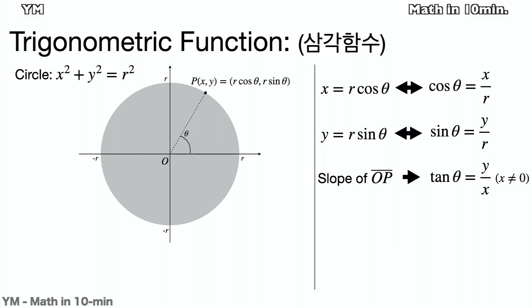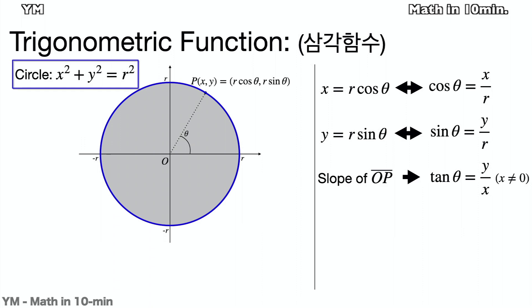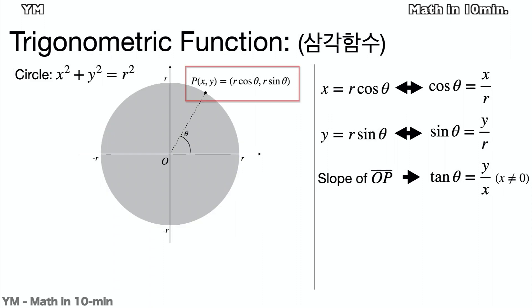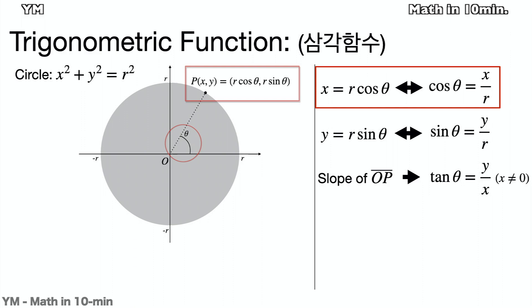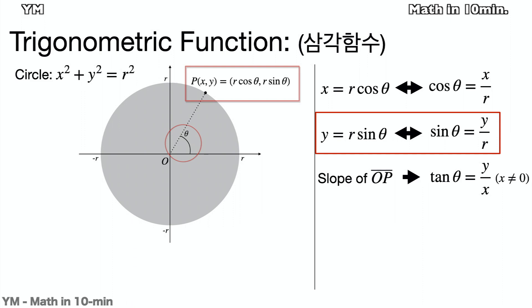Trigonometric functions. On the XY plane, a circle with radius R centered at the origin is equal to X squared plus Y squared equals R squared. The coordinates of a point P on the circle can be expressed as follows, where theta is the angle between the positive x-axis and the line from the origin to P. From this, we get X equals R cosine theta, or cosine theta equals X over R, and Y equals R sine theta, or sine theta equals Y over R.